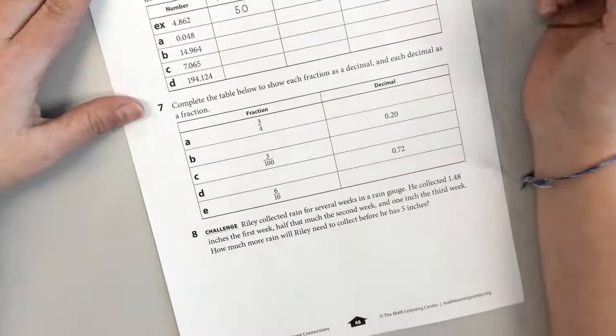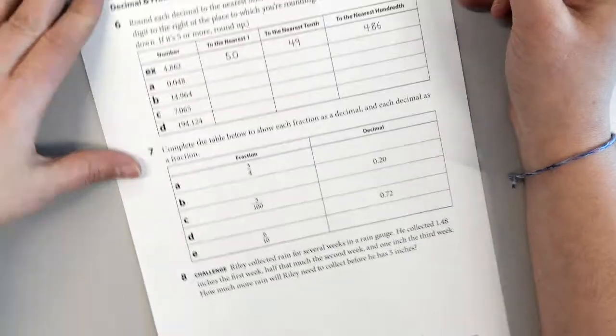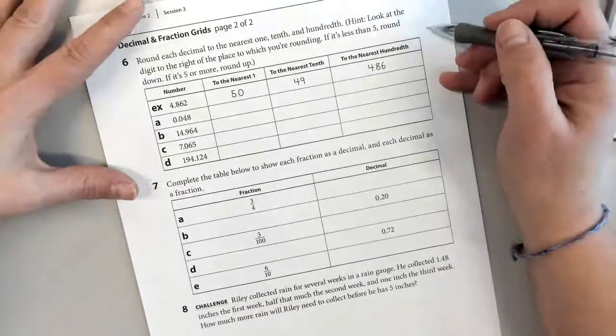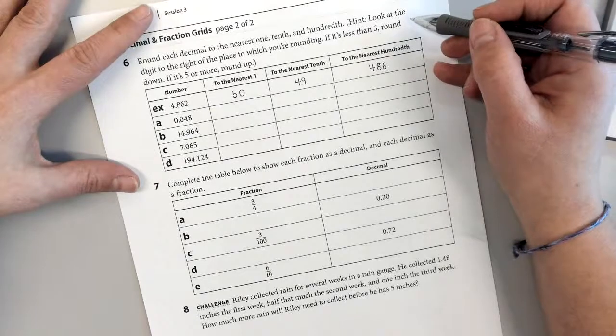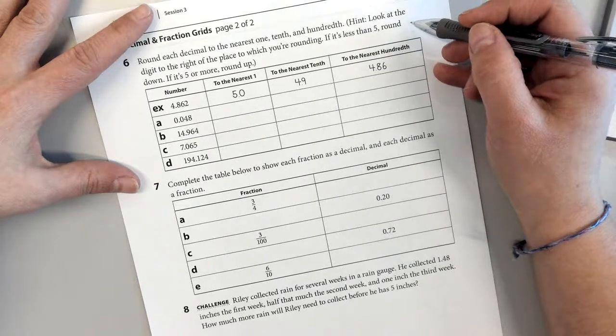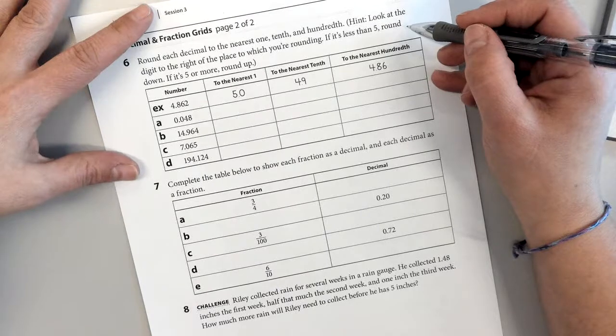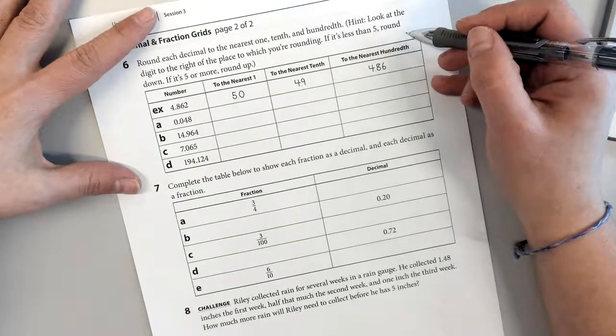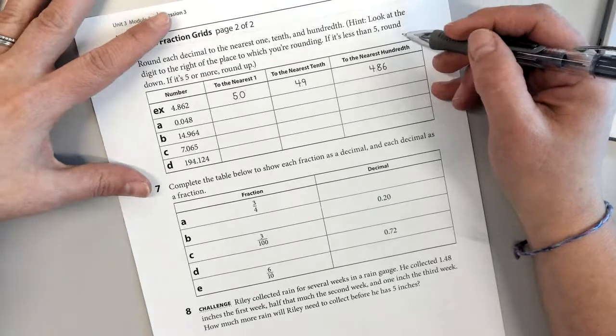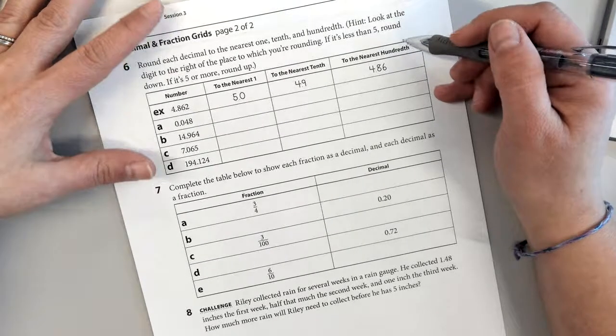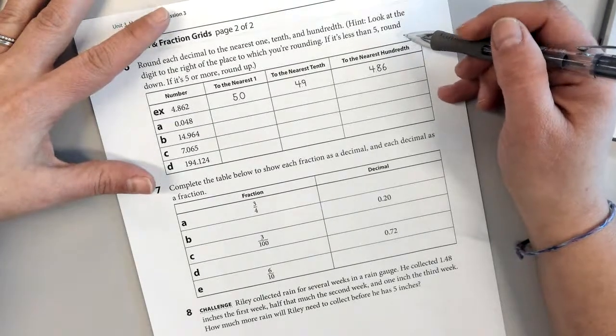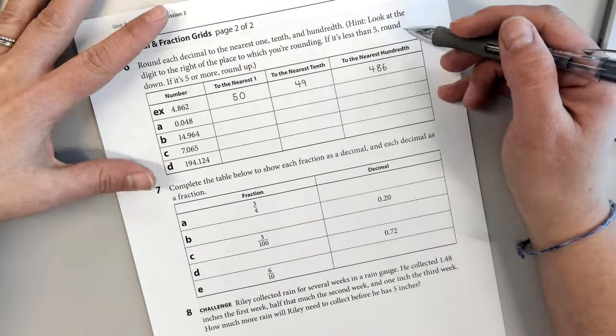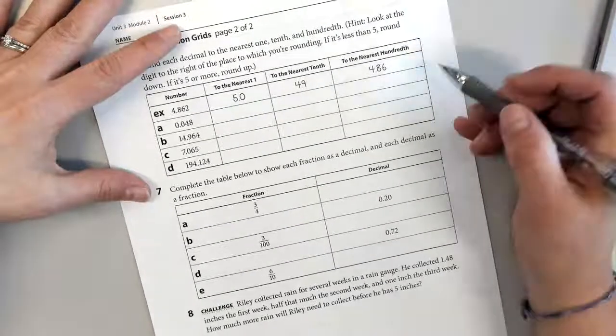On number six, round each decimal to the nearest one, tenth, and hundredth. Hint, look at the digit to the right of the place to which you're rounding. If it's less than five, round down. If it's five or more, round up. Like I said in class, five or more, raise the score. Four or less, let it rest. Five or, I can't remember what the other rhyme is, but that's one rhyme to help you do it.